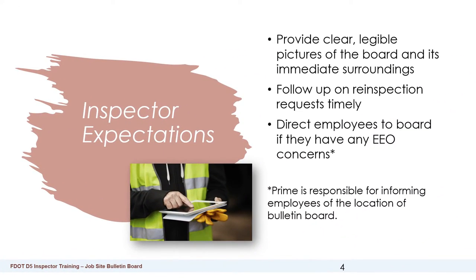Inspector Expectations: upon the request of the RCS, the inspector is to provide clear, legible pictures of the Bulletin Board and its immediate surroundings, follow up on any reinspection requests timely, and direct employees to the board if they have any EEO concerns. It is important to note that the prime is responsible for informing employees of the location of the Bulletin Board — it is not the responsibility of the inspector.